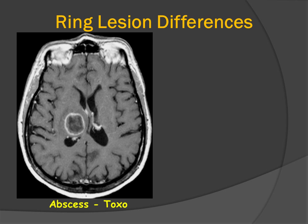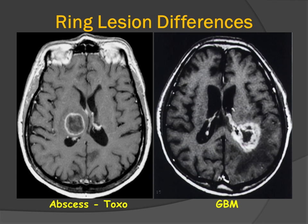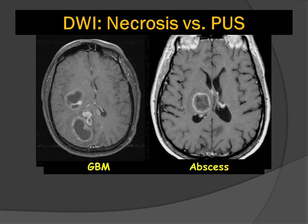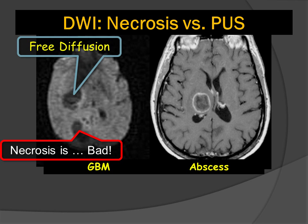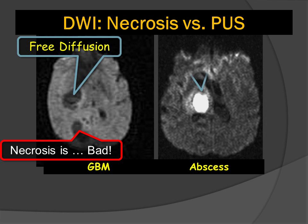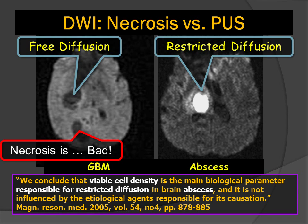Comparing an abscess of toxoplasmosis with a necrotic neoplasm (GBM), we can see how different the rims are — one is thin and smooth, the other is thick and irregular. On side-by-side DWI, the GBM shows a multilocular appearance with increased diffusion from necrosis, while the abscess shows restricted diffusion from pus. The primary cause of restricted diffusion in an abscess is viable cells, typically macrophages.